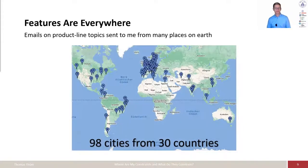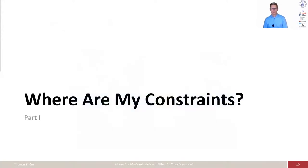Features are everywhere. There's a map of the world. These are places from where people have sent me an email. The email was about product lines and about features. This is a topic that researchers and practitioners are working on, on features worldwide. There seems to be something behind this. To come to this question, where are my constraints, we have seen these features, but there's something in between features and constraints. This is feature interactions.